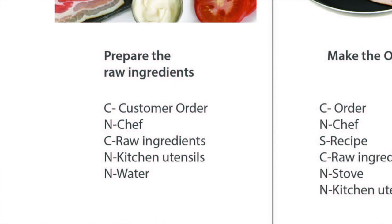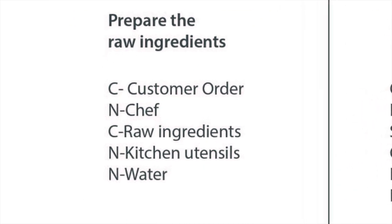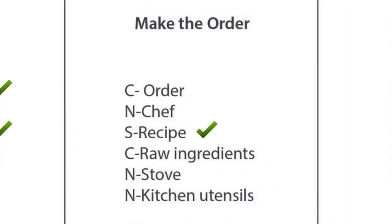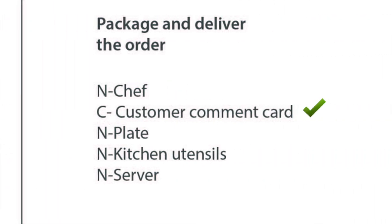For step three, you list all the inputs required to create the output of each process step. Some key inputs from our example are: chef, customer order, and raw ingredients from the prepare process step; the recipe from the make process step; and the customer comment card from the package and deliver process step.